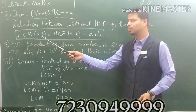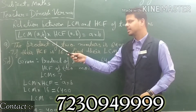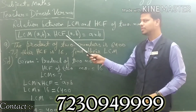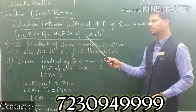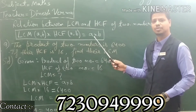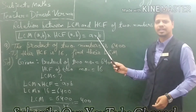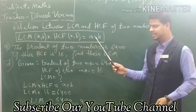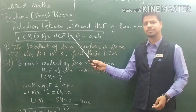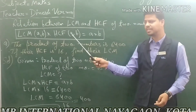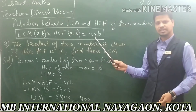The relation is: LCM of 2 numbers A and B, multiplied by the HCF of these 2 numbers A and B, is equal to the product of these 2 numbers, that is A × B. So LCM × HCF equals the product of the two numbers.